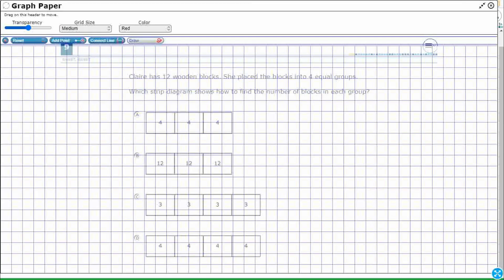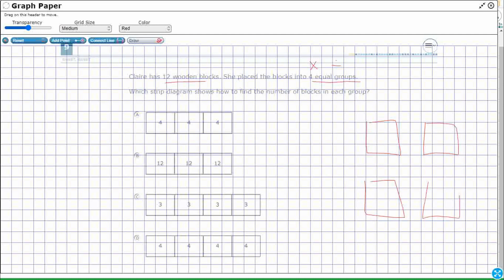So we have 12 wooden blocks and we're going to place the blocks into four equal groups. Four equal groups. So this lets me think, all right, it's supposed to be multiplication or division. So one easy way to do that would be to let's just draw four groups here. And I'm going to have 12 wooden blocks, okay? So I'm just going to divide them up evenly.